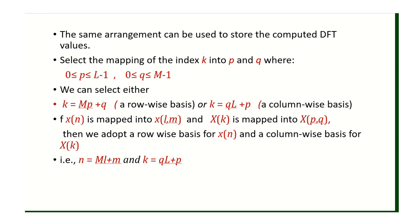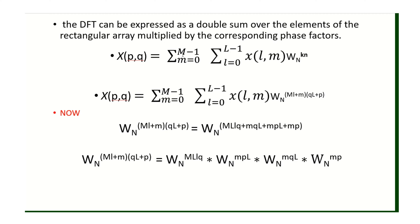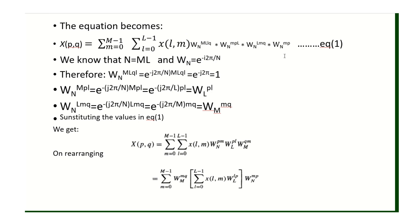The DFT can be expressed as a double summation over the elements. X(P, Q) is the two-dimensional representation of X of k, and n is represented as (l, m). Substituting K = Q·L + P and n = M·l + m into the exponent omega_N power KN, and multiplying out (M·l + m)(Q·L + P), we obtain an expanded expression. Since M·L = N, the term omega_N power ML·QL equals e to the power minus j2π, which equals 1 and drops out.